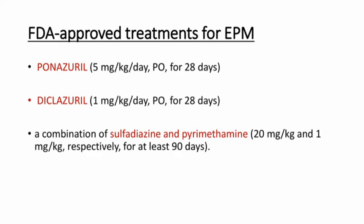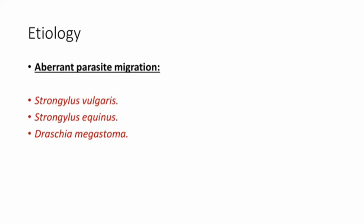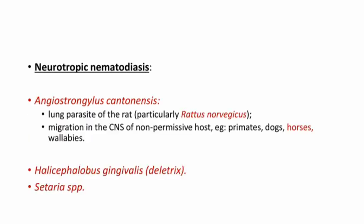The fifth condition is verminous encephalomyelitis. The etiologies can be varied — many parasites can cause this disease. There can be aberrant parasite migration caused by Strongylus vulgaris, Strongylus equinus, or Draschia megastoma. It can also be caused by neurotropic nematodiasis from Angiostrongylus cantonensis — a lung parasite of rats — then Halicephalobus gingivalis, and Setaria species. Aberrant migration of helminth or fly larvae through the CNS of horses is uncommon but is a reported cause of neurologic disease.